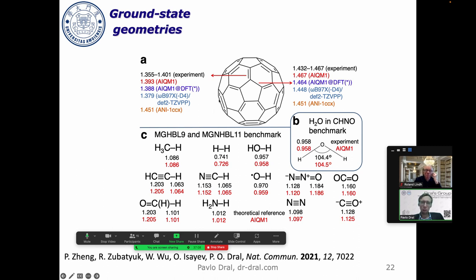For fullerene I show it because this is pure machine learning model. As you see, this local approximation makes a bit trouble. The two bond lengths are the same with pure machine learning method, but AIKM1 correctly predicts that one bond length is shorter than the other. Even for bigger molecules it works.